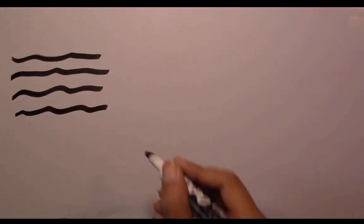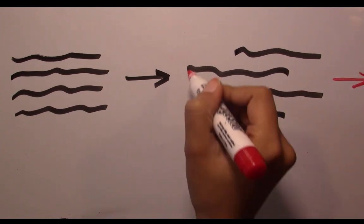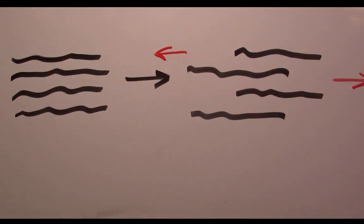Thermoplastics, on the other hand, do not crosslink when heated. Instead, the polymer chains in the thermoplastics become fluid, and can slide past each other, which causes them to melt.